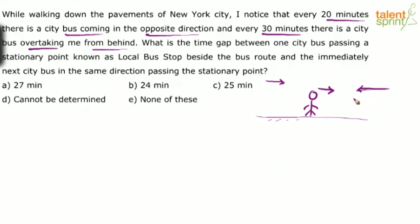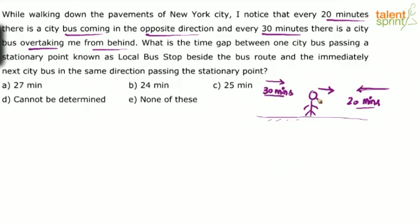Since he is moving in the direction opposite to the bus, he finds that every 20 minutes a bus comes — so the interval is 20 minutes. And every 30 minutes there is a city bus overtaking him from behind. One important point to note is that we are talking about the same city bus type. The speed of buses coming in the opposite direction and those coming from behind would be the same. Though not mentioned explicitly, we must assume this because we are talking about city buses — all buses are traveling at the same speed.